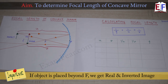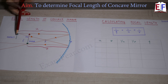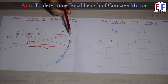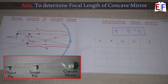You might ask: I don't know the focal length of this mirror. For that matter, what we do is place the object considerably far away from the mirror, so that we know it is beyond the principal focus.